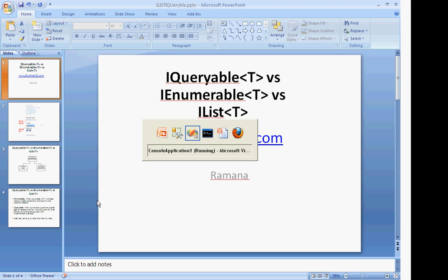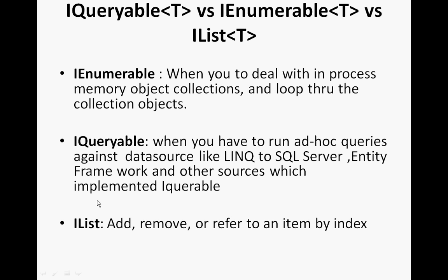Whenever you want to deal with SQL Server, LINQ to SQL, Entity Framework, or any other data framework that has implemented IQueryable, just go with IQueryable. Whenever you want to deal with in-process, in-memory collections — looping through and reading values — go with IEnumerable. When to use IList: IList is useful when you want to add an object to a collection, remove an object, or pick a particular object based on an index. For those kinds of operations, definitely go with IList.